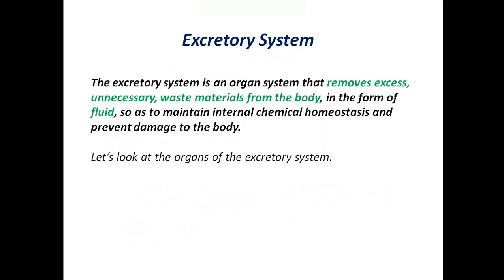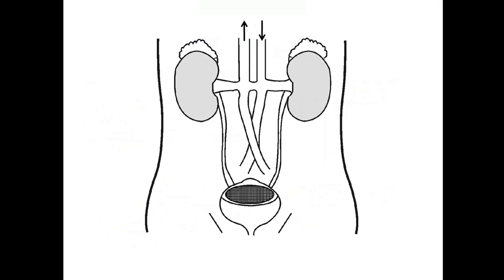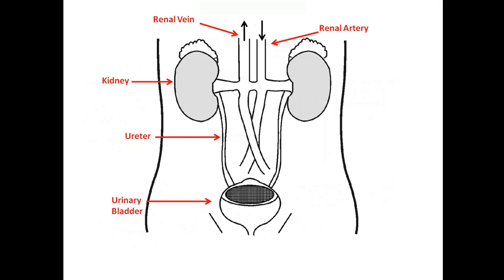Let's look at the organs of the excretory system. Here's the excretory system. Let's label it: renal vein, renal artery, kidney, ureter, urinary bladder, and the urethra.